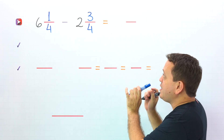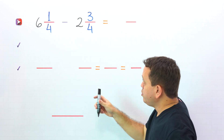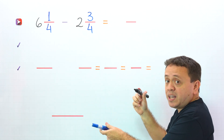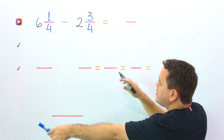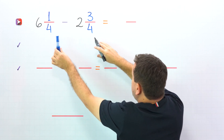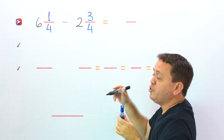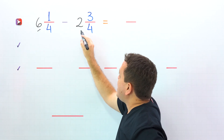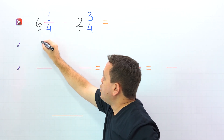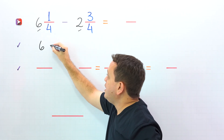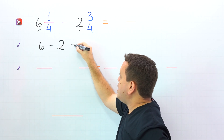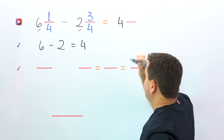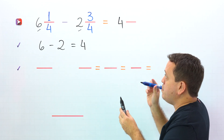Now we are ready for the example. We need to subtract 6 and one-fourth minus 2 and three-fourths. As you can see, these two mixed numbers have the same denominator. Usually, to find the difference, we start by subtracting the whole numbers — 6 and 2 in this problem. So 6 minus 2 gives us 4, and we put 4 in the answer.